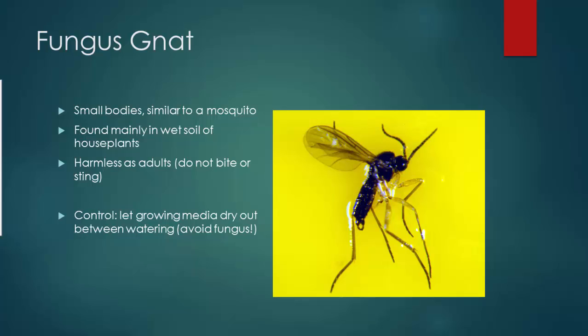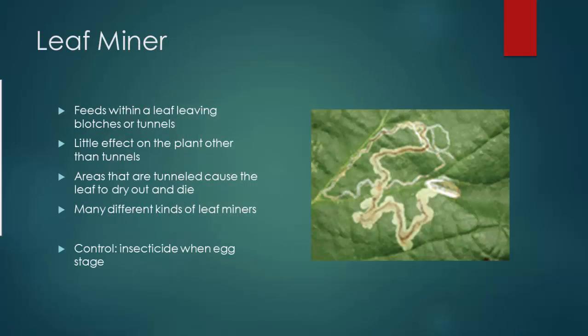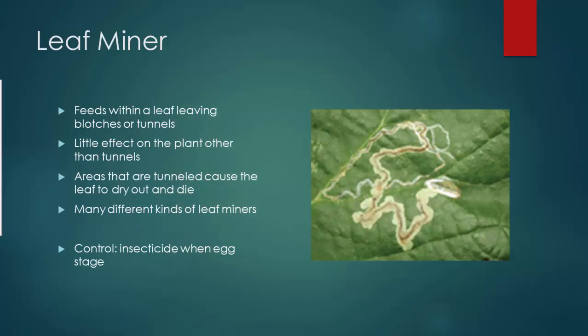One thing to watch for is these little tiny gnats — they look like mosquitoes without any stingers, like little dots flying around. Usually it's when you have that green scale coming over the top of your soil.